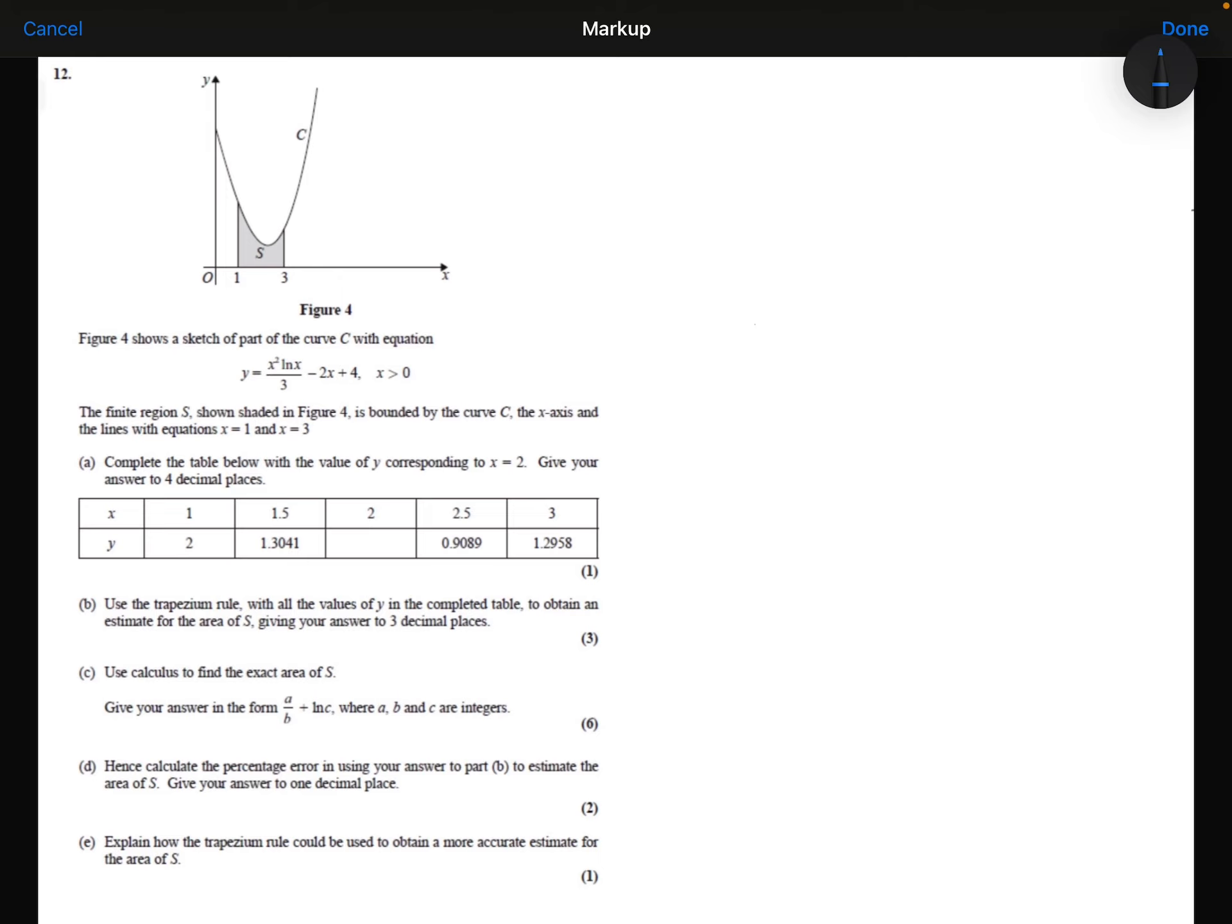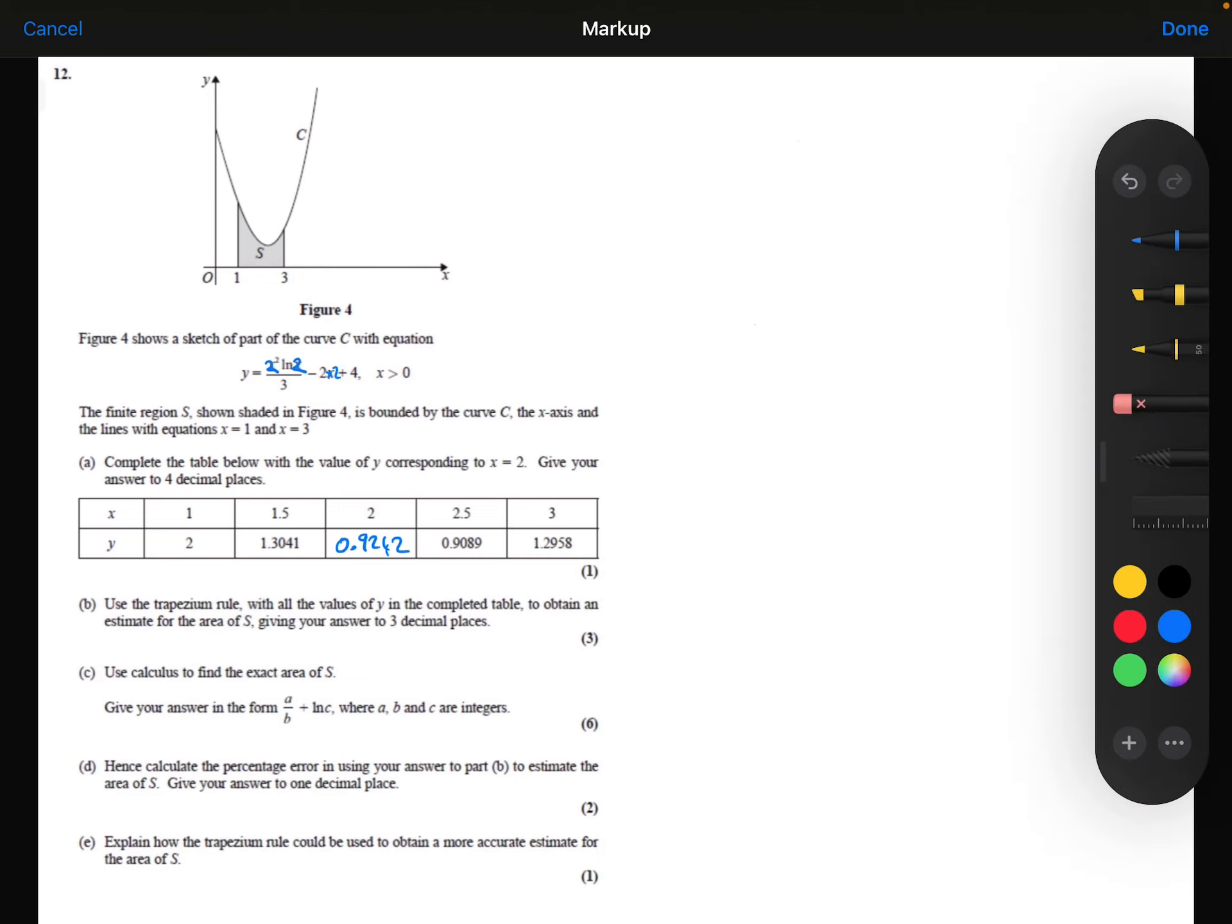Part A: Complete the table below with the value of y corresponding to x equals 2. Give your answer to four decimal places. So we're going to substitute 2 into our function: 2 squared times ln 2 divided by 3 minus 2 times 2 plus 4. If we substitute that in, we get 0.9242 to four decimal places. That's the answer to Part A.